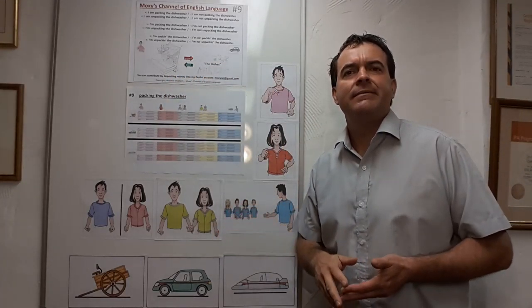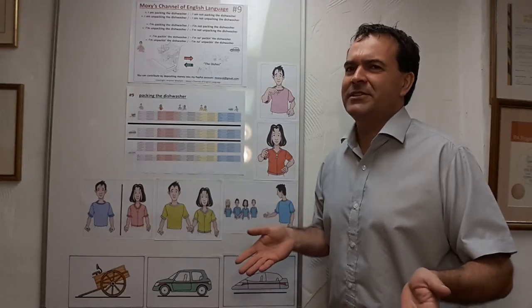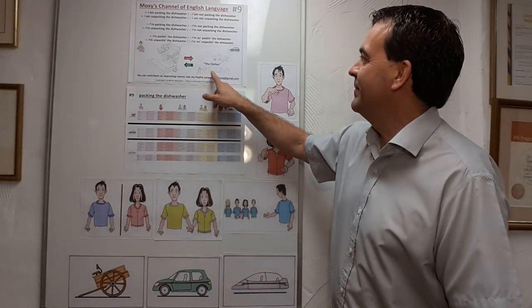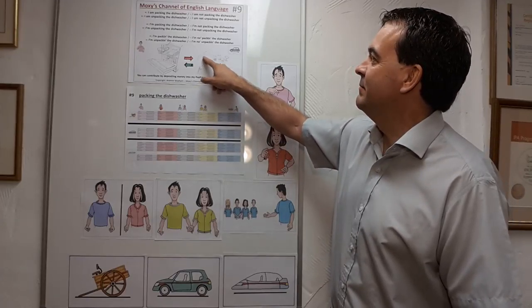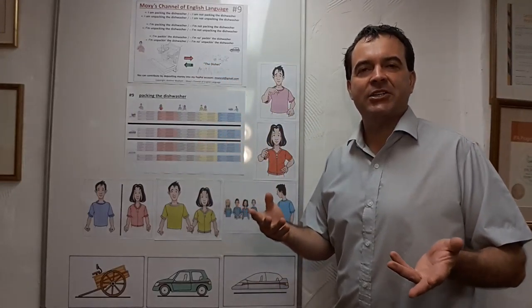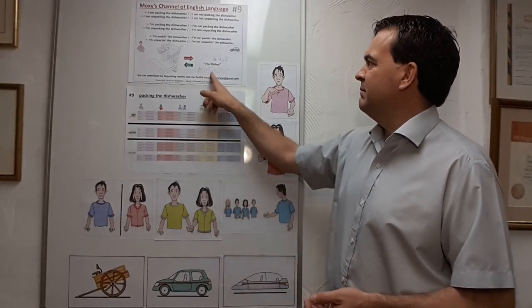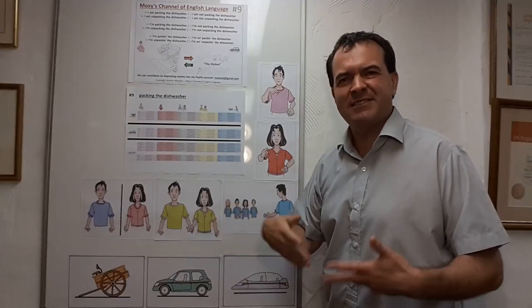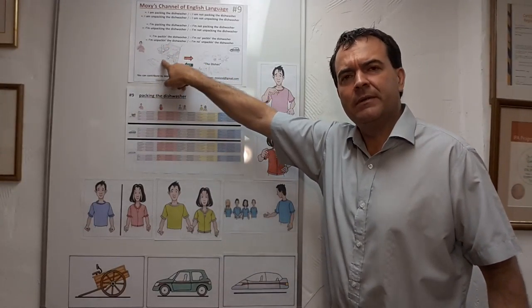What does that mean — what are 'the dishes'? Well, as coincidence would have it — not really coincidence, I made it like this — everything we've done: cutlery, cups, glasses, bowls, and saucepans. A dish is actually a plate, like a deep plate, but we call all of these things 'the dishes'.